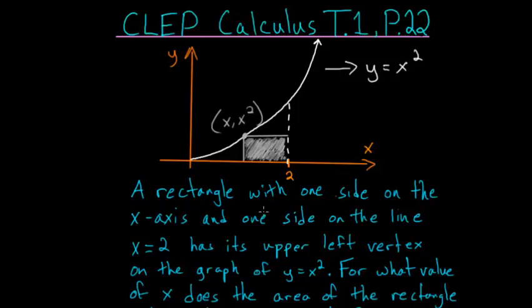A rectangle with one side on the x-axis and one side on the line x equals 2 has its upper left vertex on the graph of y equals x squared, so this point here.